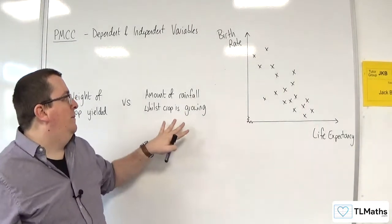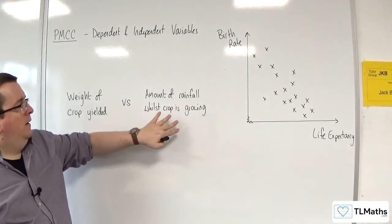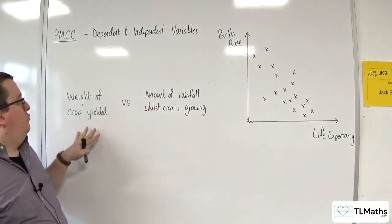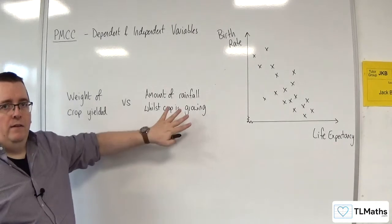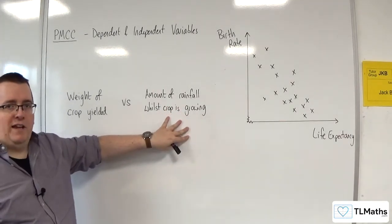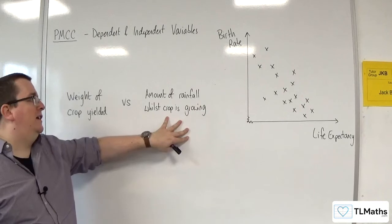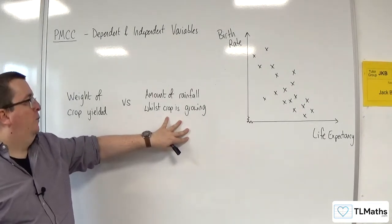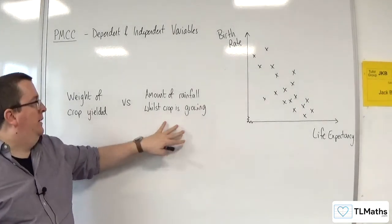Because that would be assuming that if the crop was larger, then the rainfall kind of like knew it had to get larger as well. So, there had to be more rainfall, which doesn't make any sense.